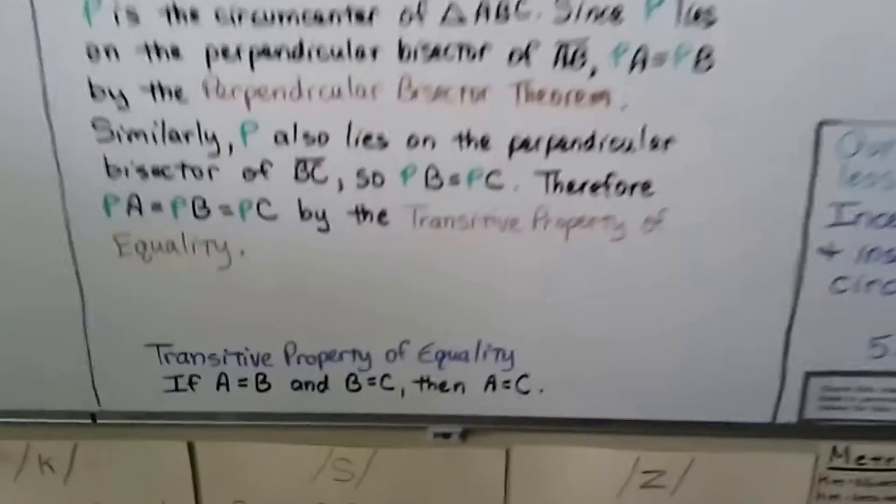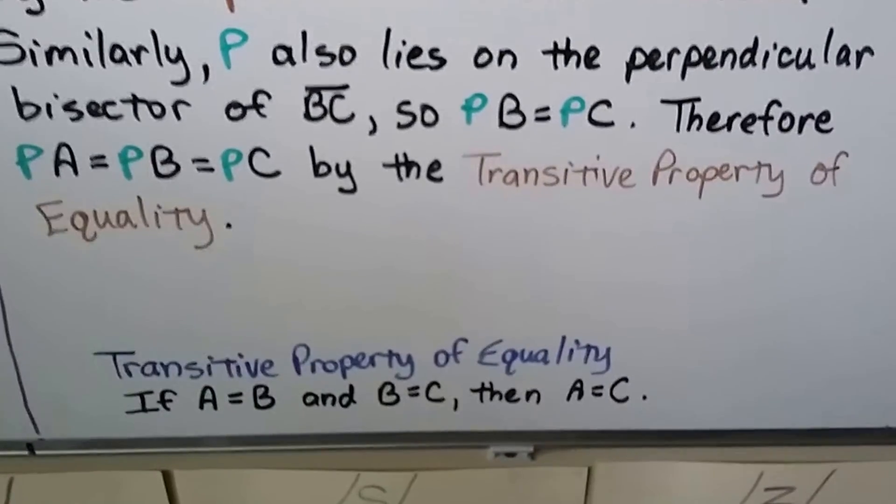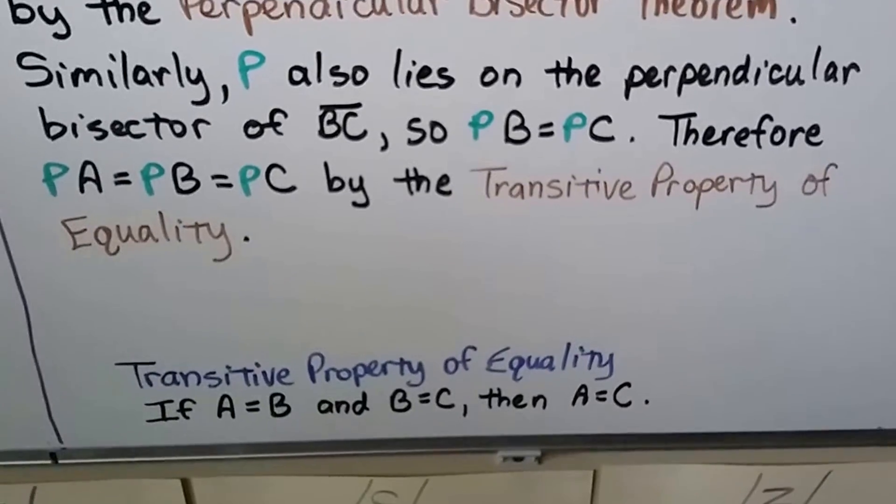If you don't remember what that is, if A equals B and B equals C, well then A equals C. They all equal each other, don't they?